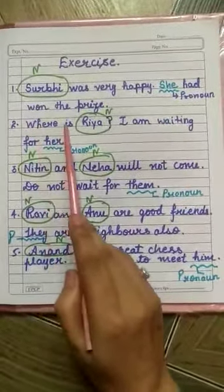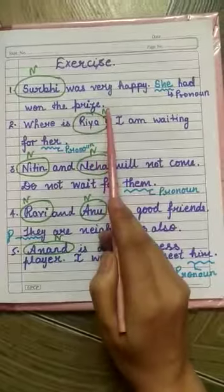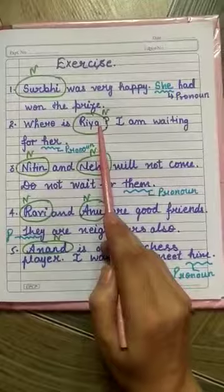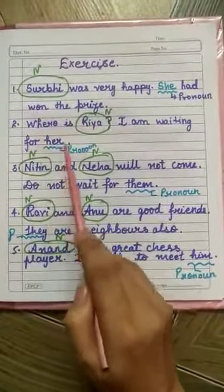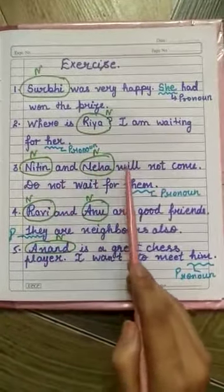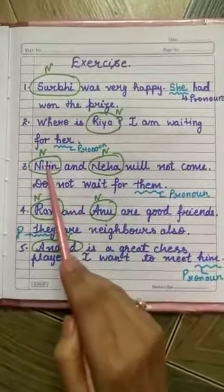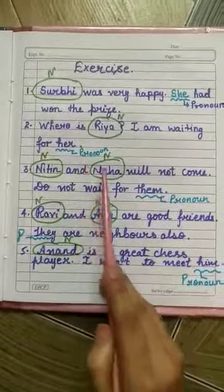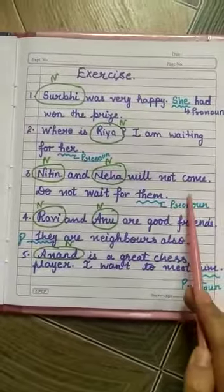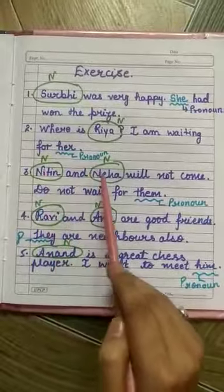Where is Rhea? I am waiting for her. Rhea is a noun; her is a pronoun. Rhea is replaced by the pronoun her. Nithin and Neha will not come. Do not wait for them. Nithin and Neha are the nouns, and them is a pronoun which is used in place of Nithin and Neha.